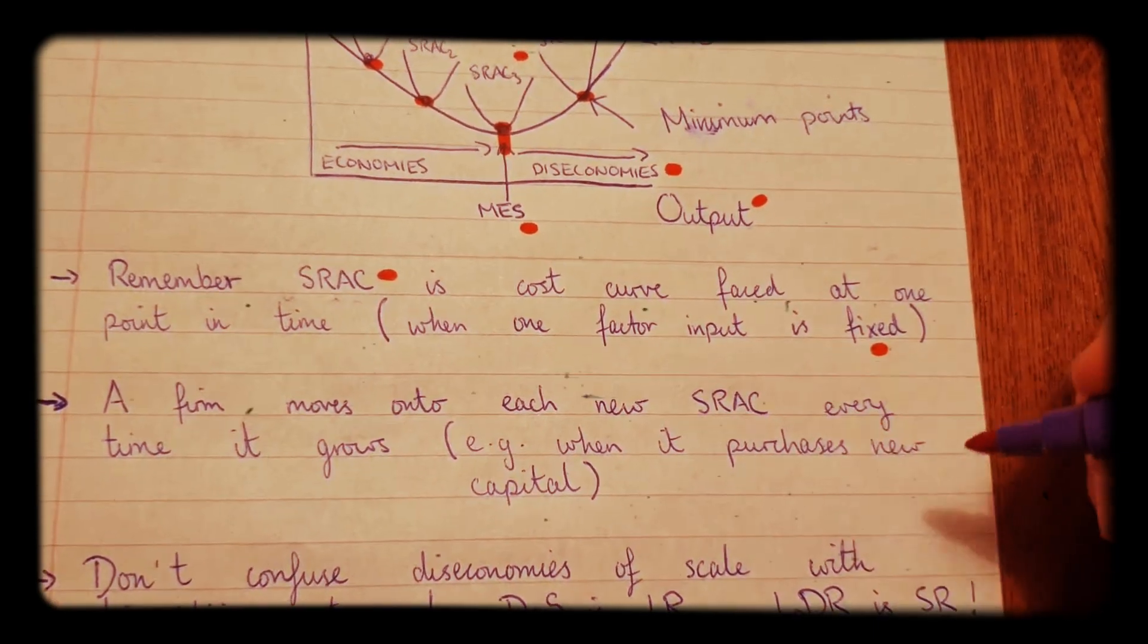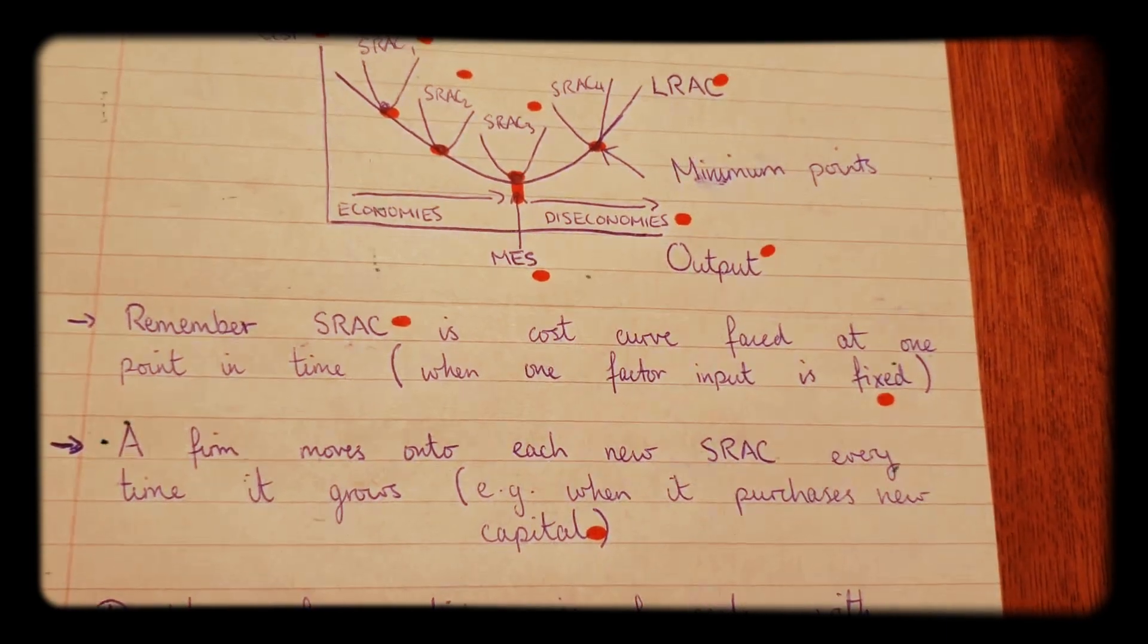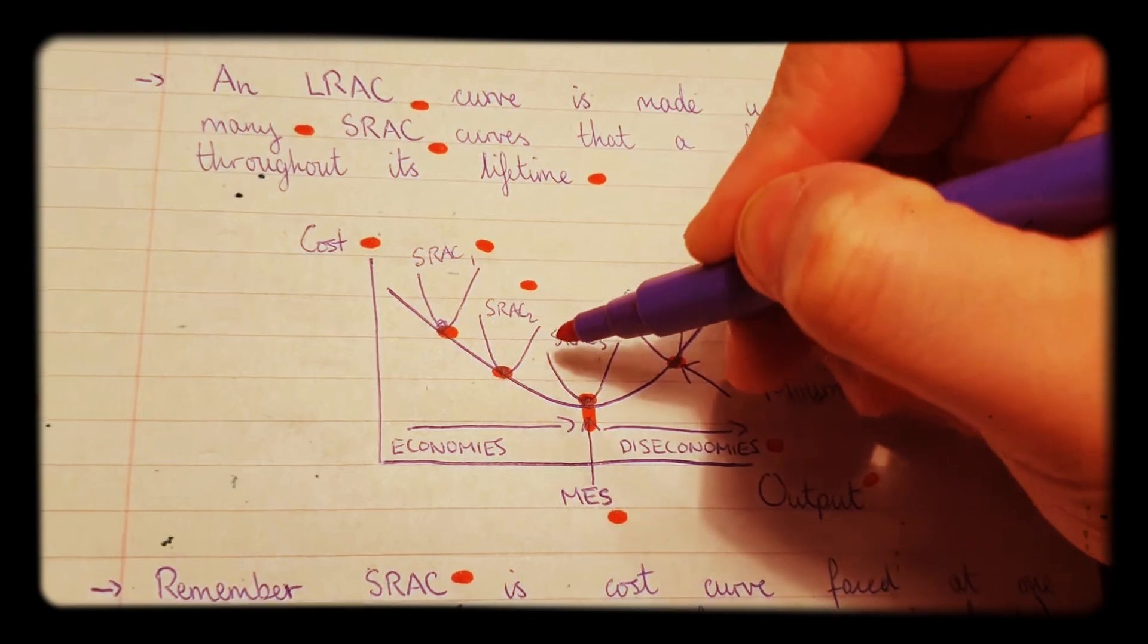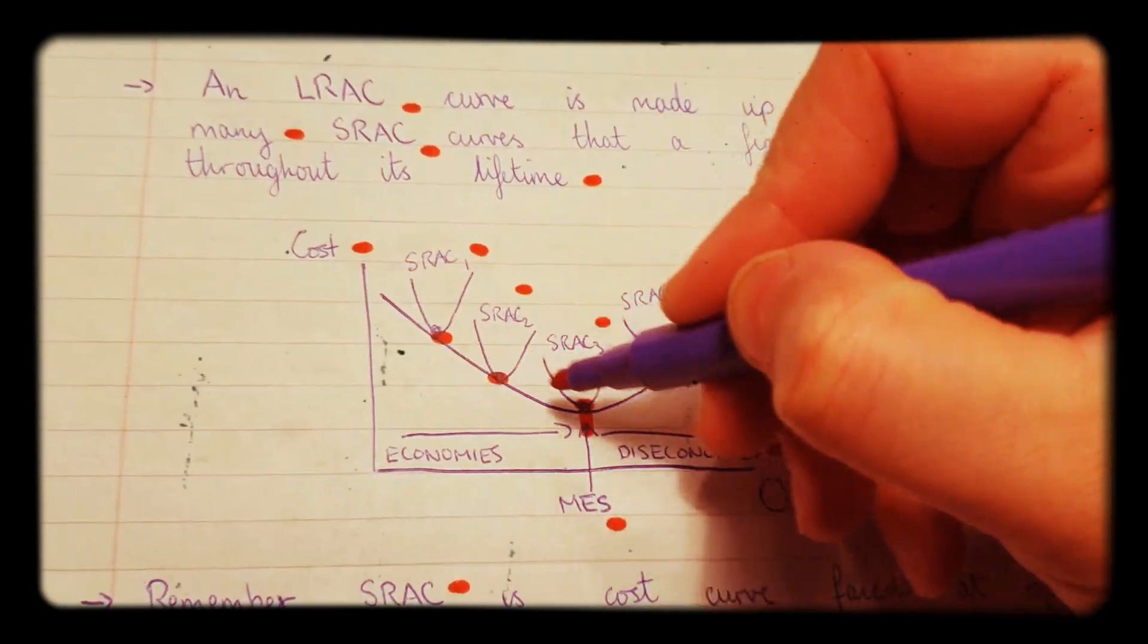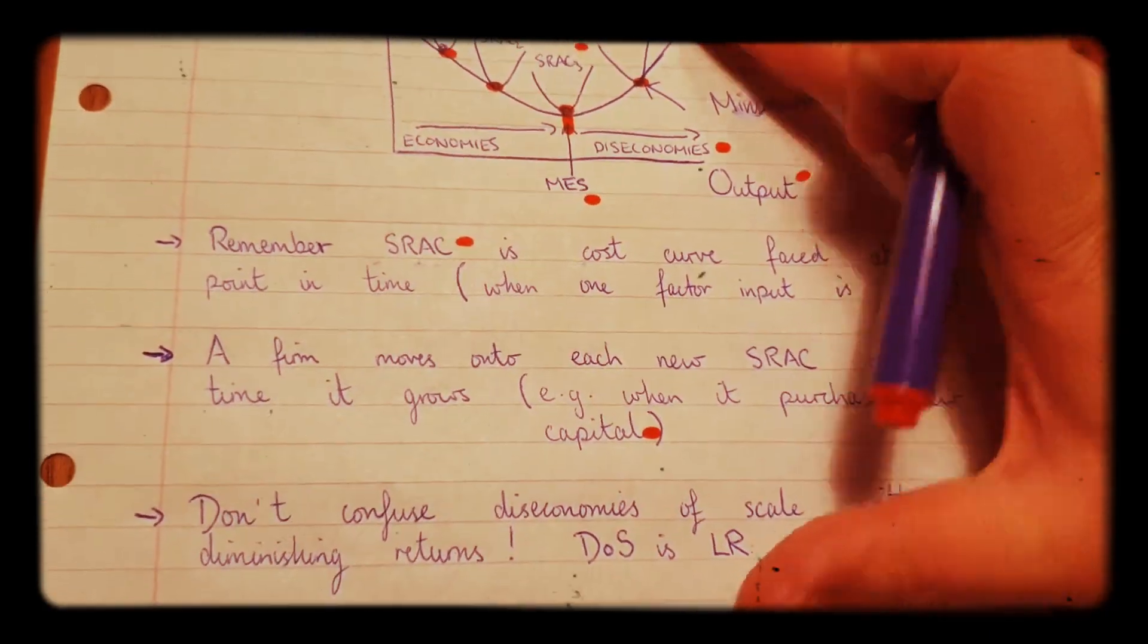So, for example, whenever the firm purchases new capital to expand the business, every time it grows, it faces a new short run average cost curve. And when you connect these dots up, you get the long run average cost curve.